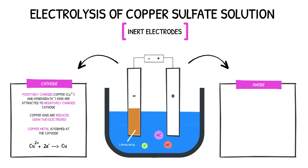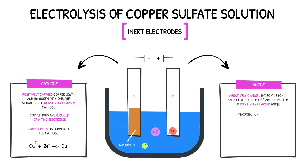At the anode, both the sulphate and hydroxide ions are attracted. Sulphate ions are never discharged during electrolysis and so remain in solution. However, the hydroxide ions are oxidised, losing one electron to form oxygen gas and water. Bubbles will begin to form as the oxygen gas is discharged at the anode.